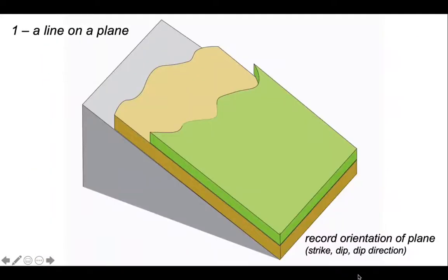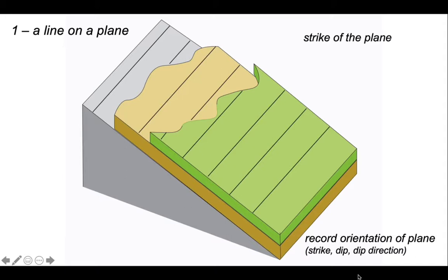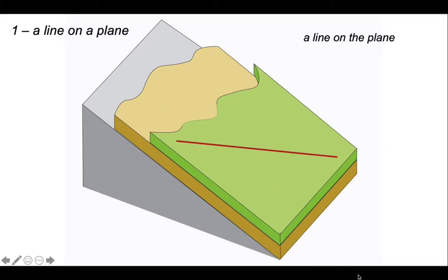Let's think about how we can record lines in geology, starting with a line on a plane. The first thing we need to do is record the orientation of the plane with the strike, its dip, and the dip direction towards a particular quadrant. Here is the orientation of the strike, represented by those horizontal lines on our block diagram. A line on this plane could be the preferred orientation of a mineral, the drag line of a sauropod tail, or something representing paleo flow direction.